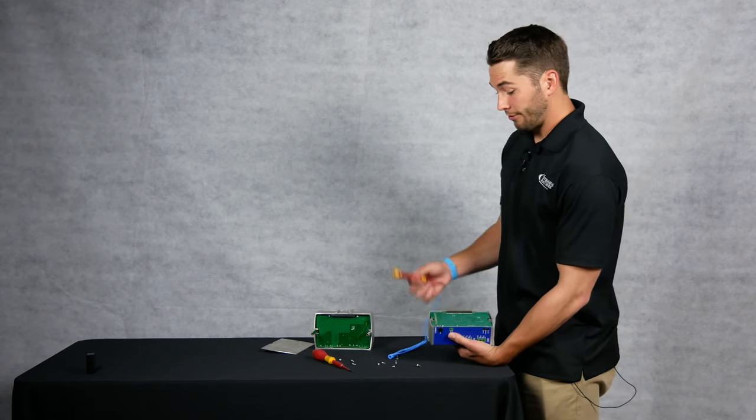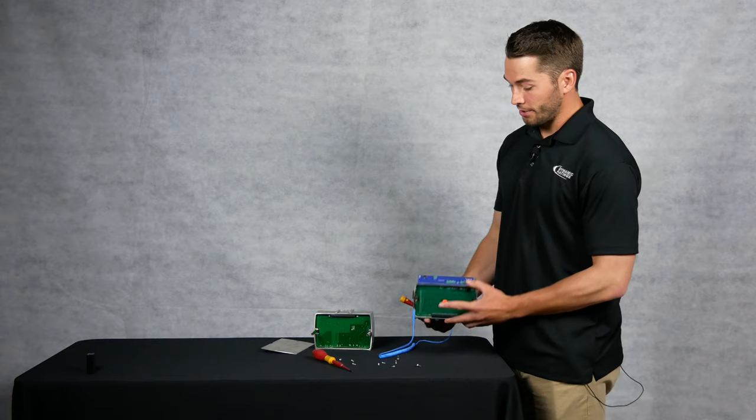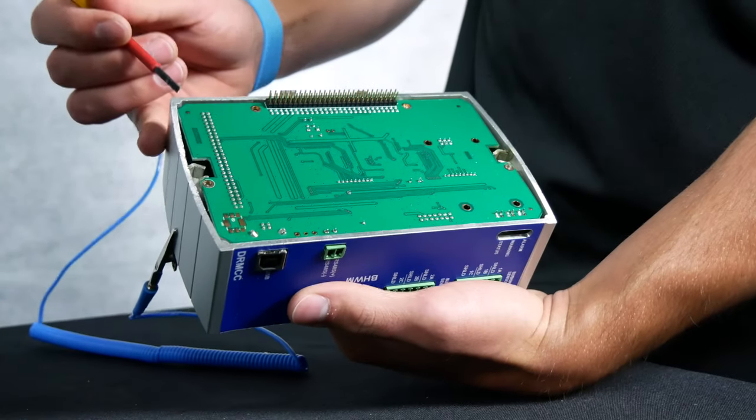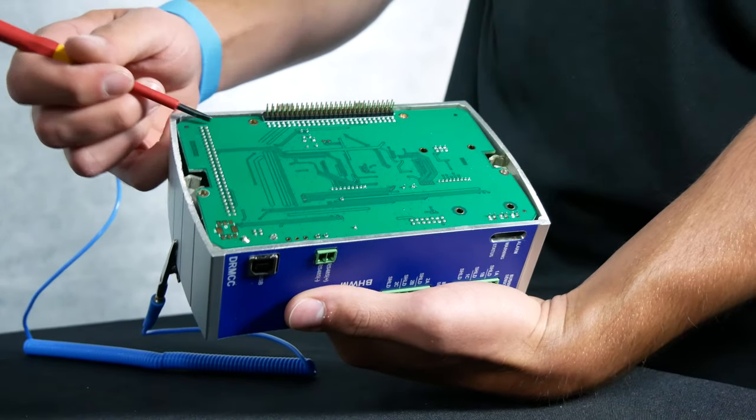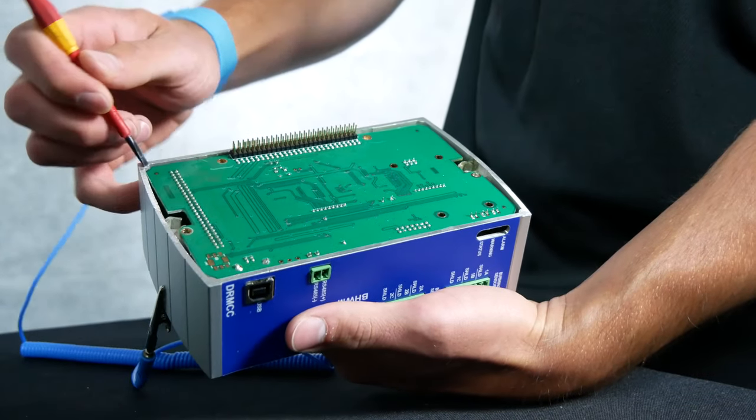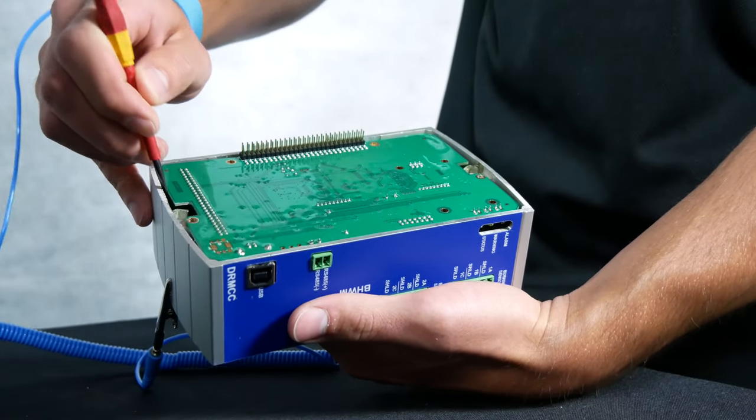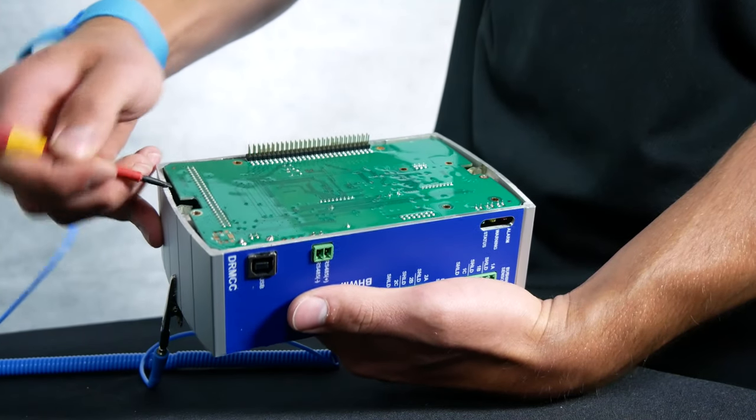...now you get to the hard part where you use your flat head screwdriver and you try to split these two boards apart. In this top corner here where you have a set of pins here and here, these pins are keeping it together so you want to start in this cluster here and just very slowly and carefully start prying the boards apart.